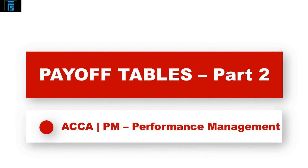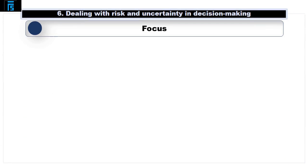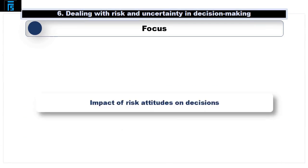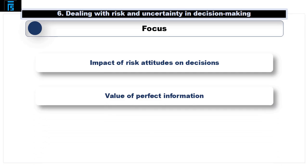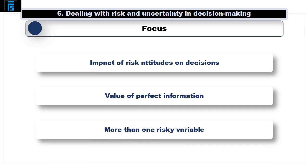Welcome back. This is the second video considering the use of payoff tables and how they can help us to make decisions when faced with risk. In this video, we'll consider the impact risk attitudes have on our decisions, the value of additional information that's guaranteed to be correct, known as perfect information, and decision making with more than one risky variable.